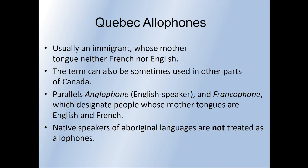Quebec allophones are immigrants whose mother tongue is neither French nor English. The term can also be used in other parts of Canada. Allophones parallel anglophones and francophones — which designate people whose mother tongues are English and French respectively. Native speakers of aboriginal languages are not treated as allophones.